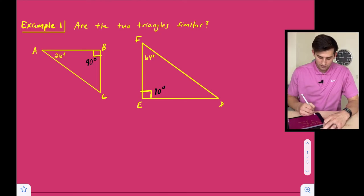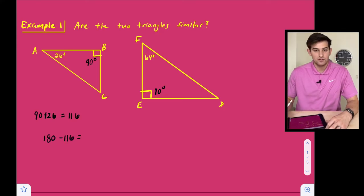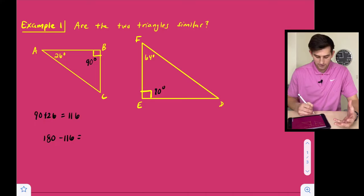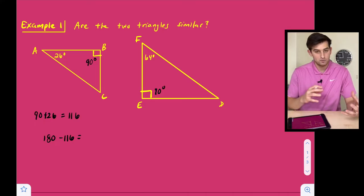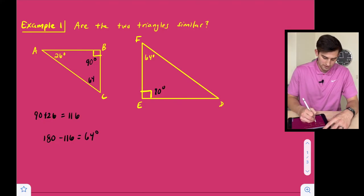Looking at triangle ABC, we can say 90 plus 26 gives us 116, and we know all three angles should add up to 180 degrees. So to find angle C, we subtract 180 minus 116, which gives us 64 degrees. So we know angle C is 64 degrees.